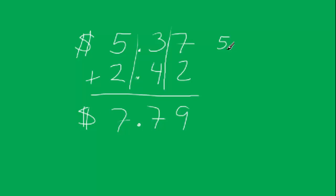You can also do it this way, $5.37 plus $2.42. And what you can do is, you can say, well I have $5 and $2, I have $7,